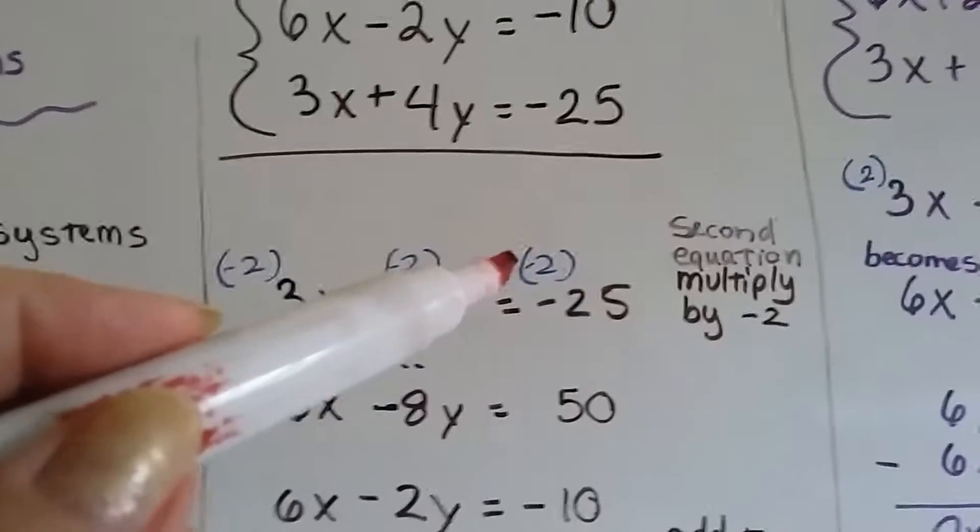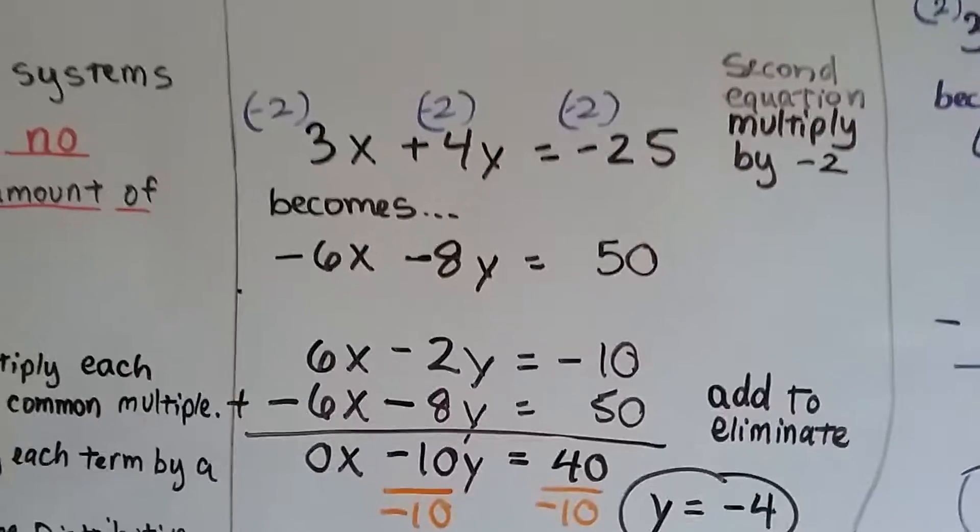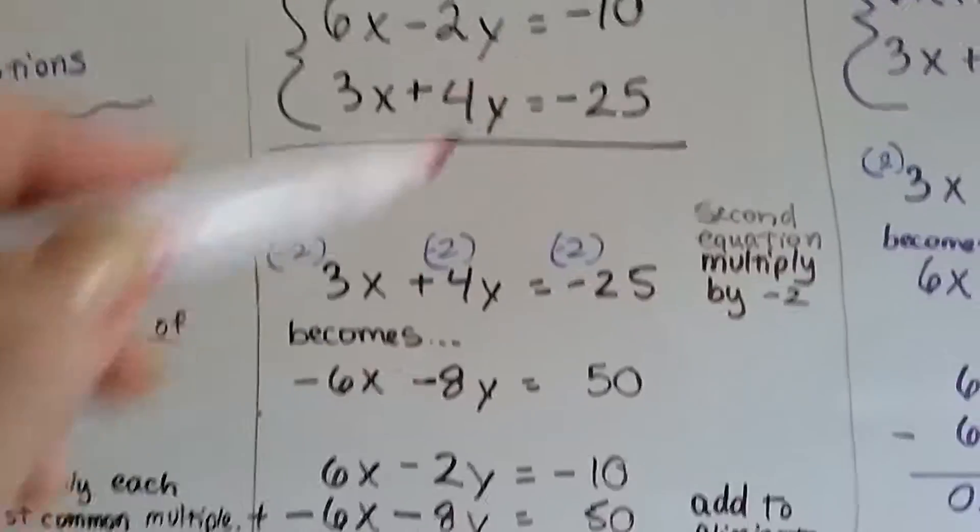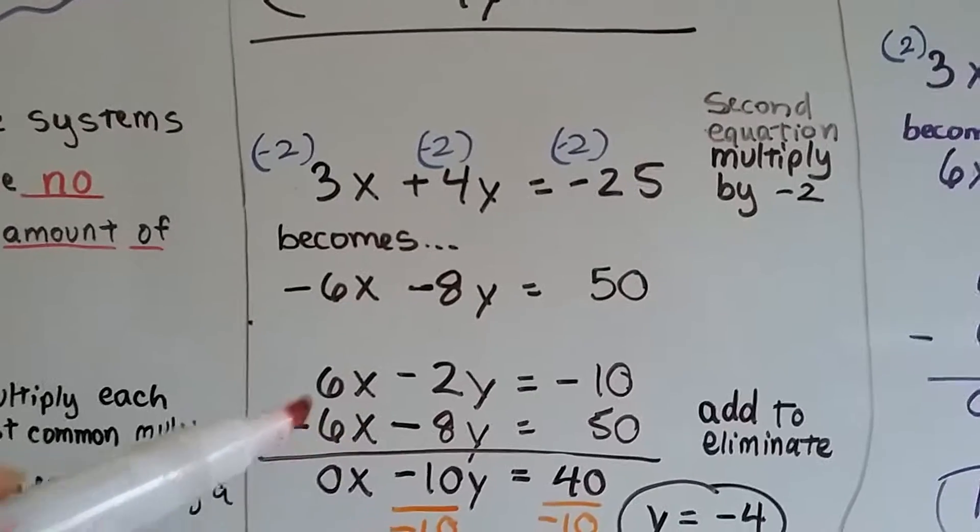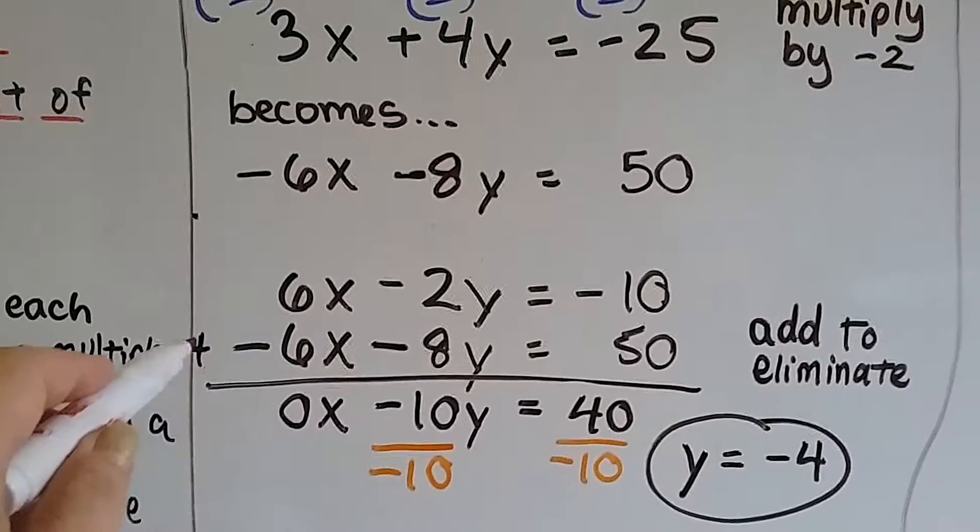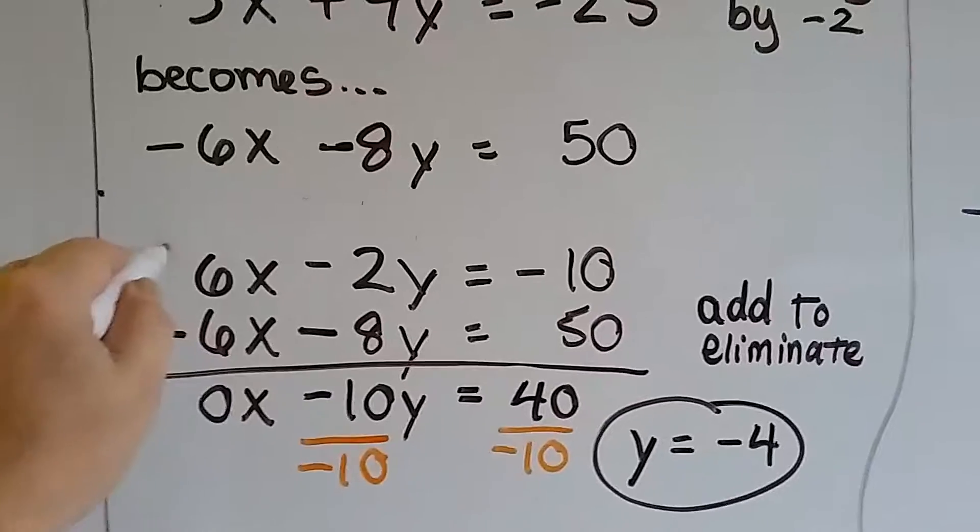Now I can stack the two equations. The 6x - 2y = -10 goes on top. I'm going to add to eliminate. We've got a positive 6 and a negative 6 that creates a zero pair and we can eliminate that.